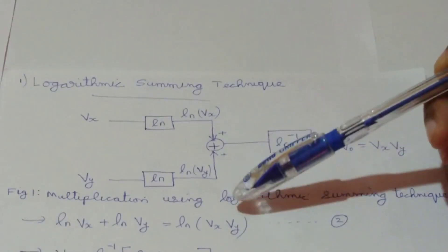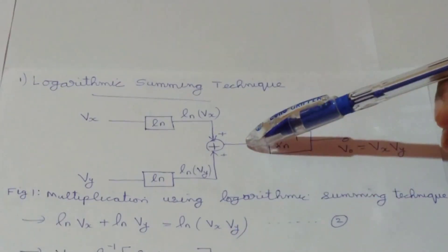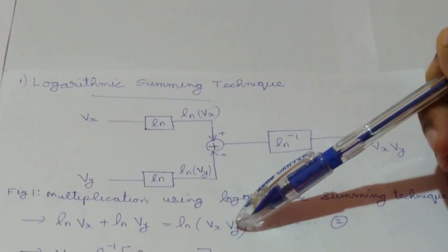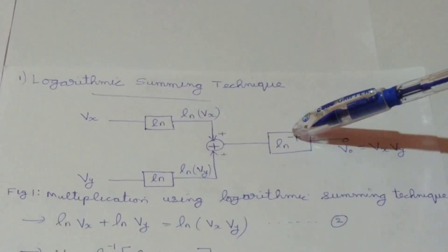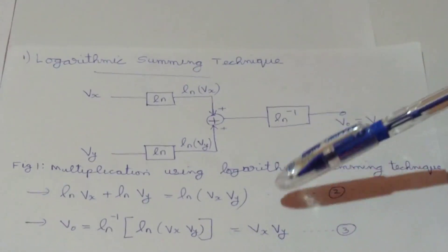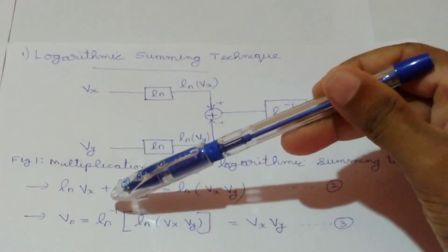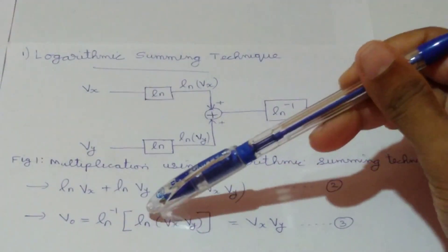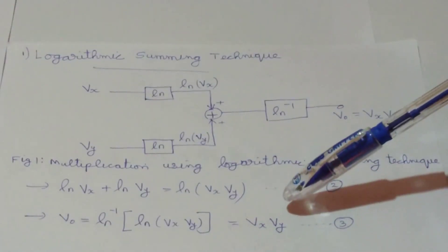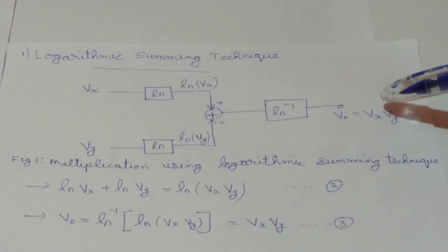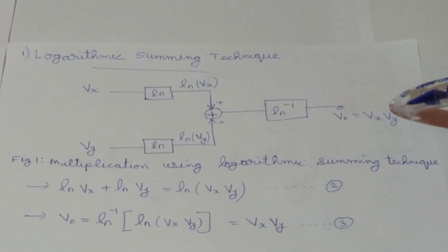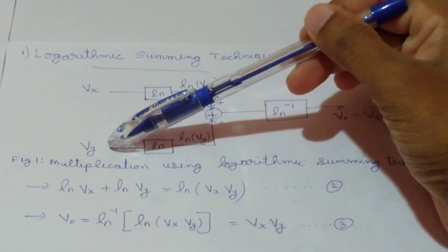Hence we now have ln(Vx·Vy). This value is passed through the anti-logarithmic converter, and at the output of the anti-logarithmic converter we will get the inverse log of ln(Vx·Vy), which equals Vx·Vy. Hence the output is Vx·Vy, which is the product of the two inputs Vx and Vy.